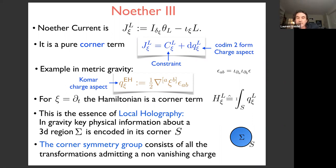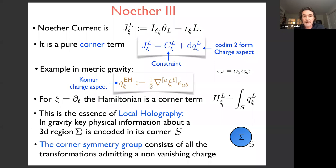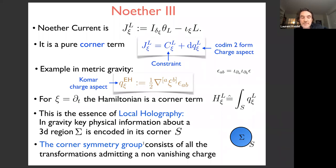This result is the essence of local holography — and in fact the essence of all holographies. In gravity, the key physical information about the 3D region is really encoded into its corner S. There's more than just one vector field that can generate this charge; there's an infinite dimensional notion of symmetry group, which we call the corner symmetry group, consisting of all transformations which admit non-vanishing charges.